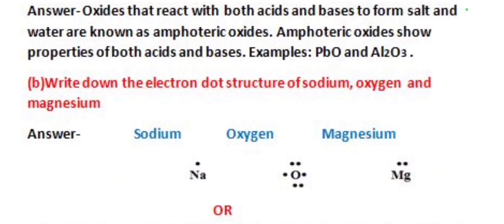There are six electrons in the outermost shell of oxygen, so we write six dots on oxygen. And there are only two electrons in the outermost shell of magnesium, so we write two dots on magnesium (Mg). These are the electron dot structures of sodium, oxygen and magnesium.